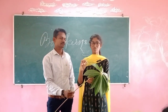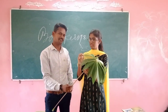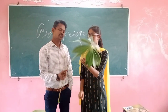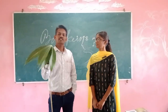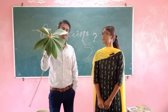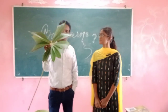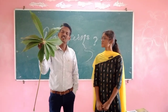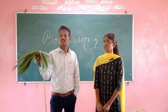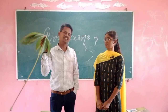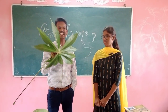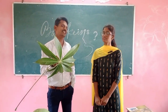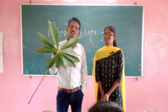So this is called a dicot leaf. This is the petiole, this is the leaf base, and these are known as leaflets. The venation seen here is reticulate venation, so automatically this leaf comes under the dicotyledonous leaf category. Thank you, Miss Keerti — give a big round of applause.